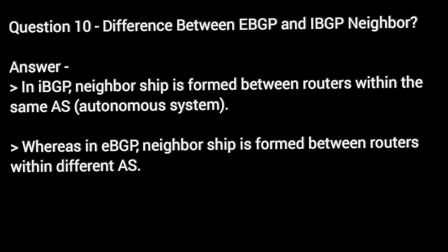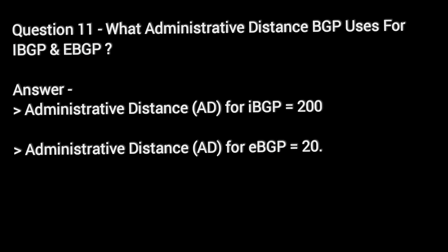Question 10: Difference between EBGP and IBGP neighbor. Answer. In IBGP, neighborship is formed between routers within the same AS (autonomous system). Whereas in EBGP, neighborship is formed between routers within different AS.